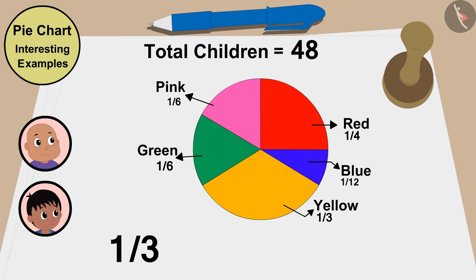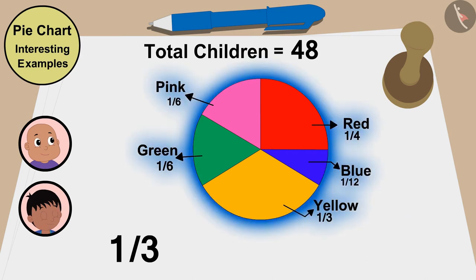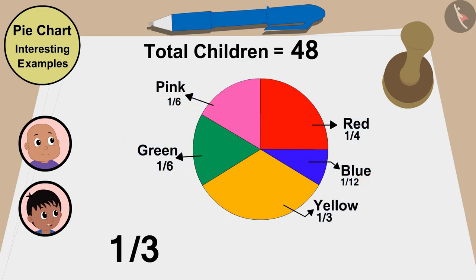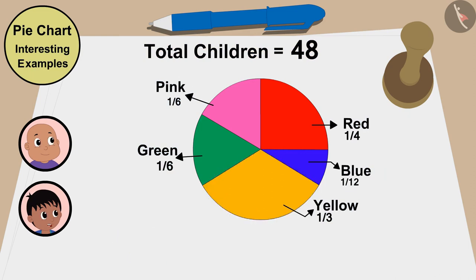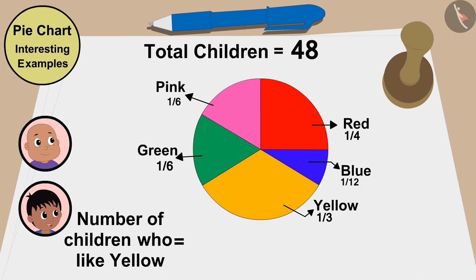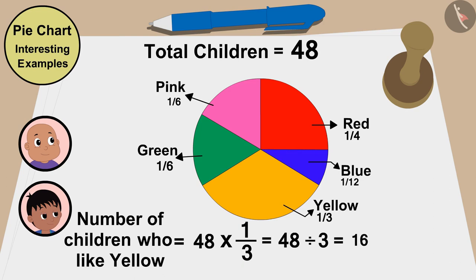Look Bablu, we have created this pie chart with the information from 48 children and one third of these children have liked yellow. So, the number of children who like yellow will be 48 multiplied by one third, or 48 divided by 3. That is 16 children. A total of 16 children like yellow.